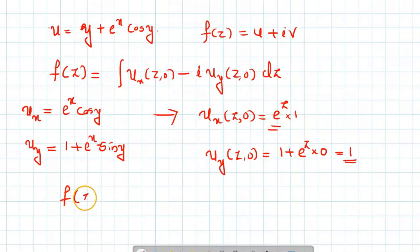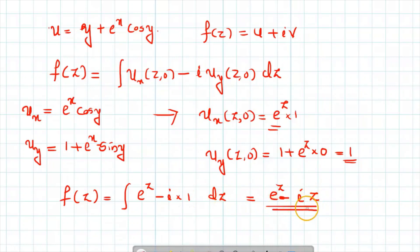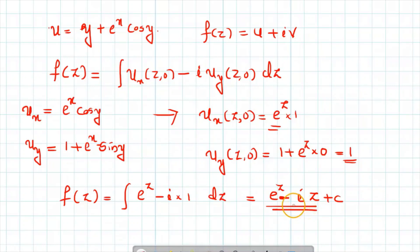So the analytic function f of z equals the integral of ux at z₀ minus i times uy at z₀, dz, which is the integral of e raised to z minus i times 1, dz. Integrating gives e raised to z minus i z plus constant of integration. Therefore, the analytic function with real part u equal to y plus e raised to x cos y is e raised to z minus i z. In this way, we can solve all problems in question 14 using the Milne-Thompson method. Hope this is helpful, thank you for watching.